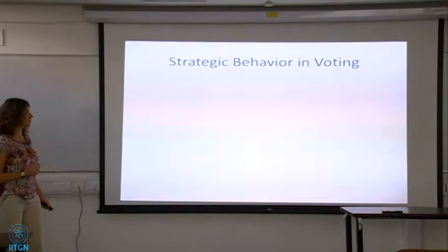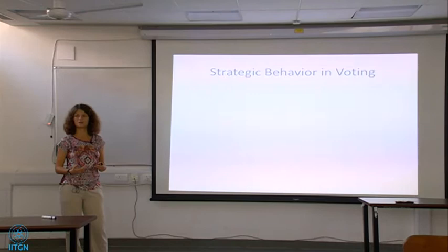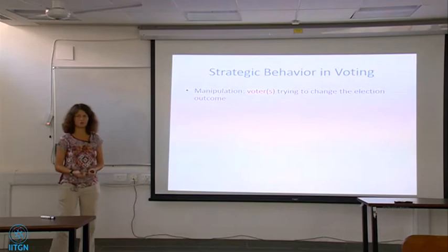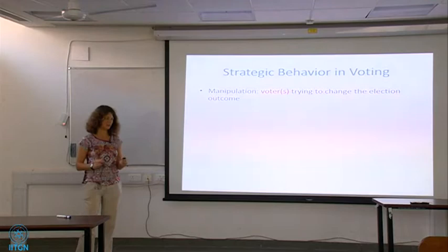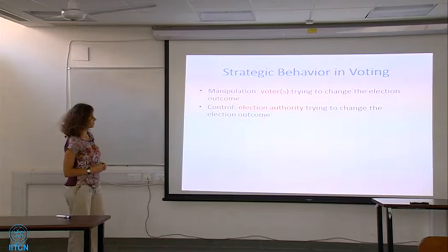To give you a broad overview: strategic behavior in elections is typically classified into three types. First is manipulation — strategic behavior by voters changing their preferences, reporting their preferences insincerely, individually or in groups to get better outcomes. The second one, which we'll cover today, is control.